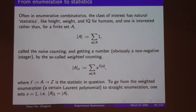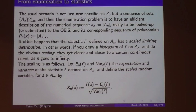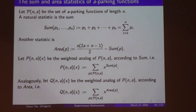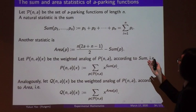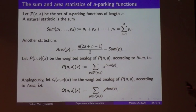We now consider statistics on a-parking functions. The 'sum' statistic is simply the sum of all elements in the parking function. The 'area' statistic has a specific definition connected to the Brownian excursion, which I'll explain shortly.